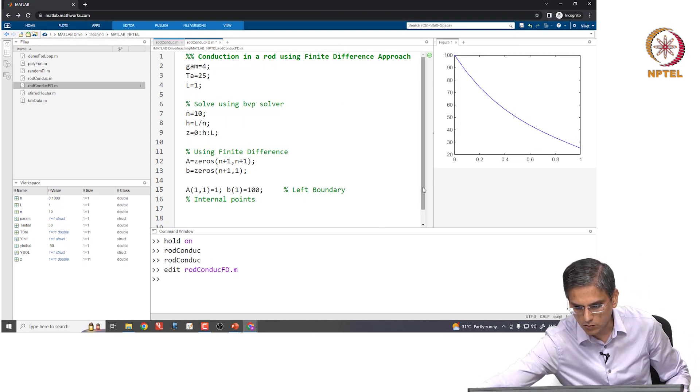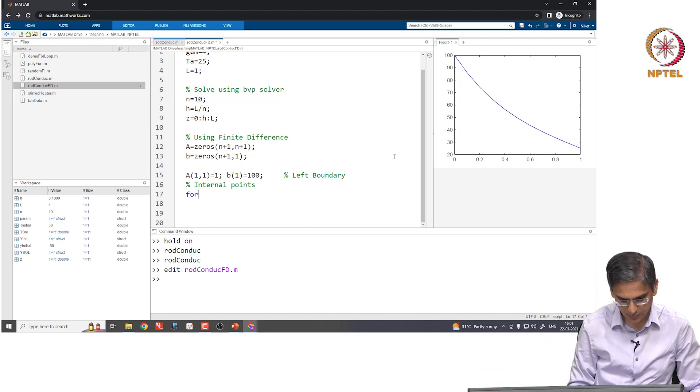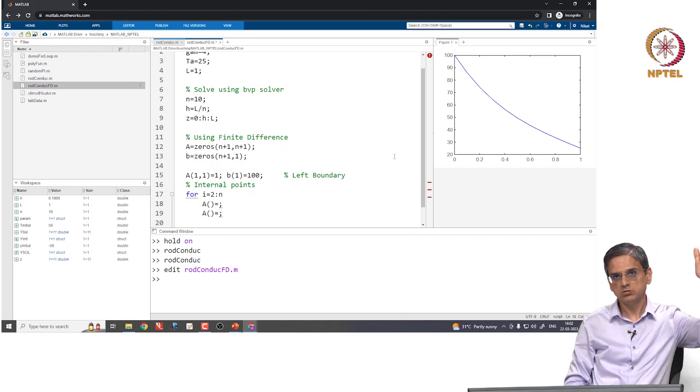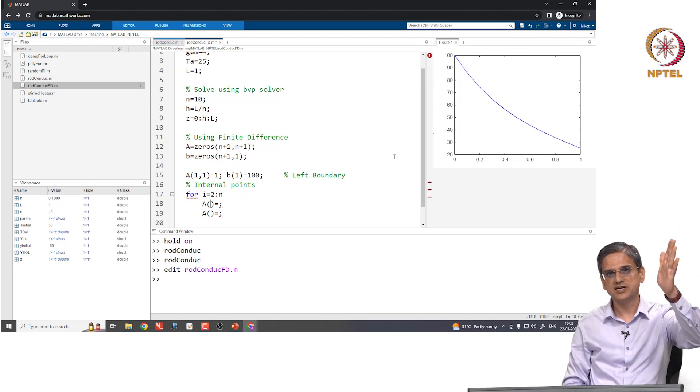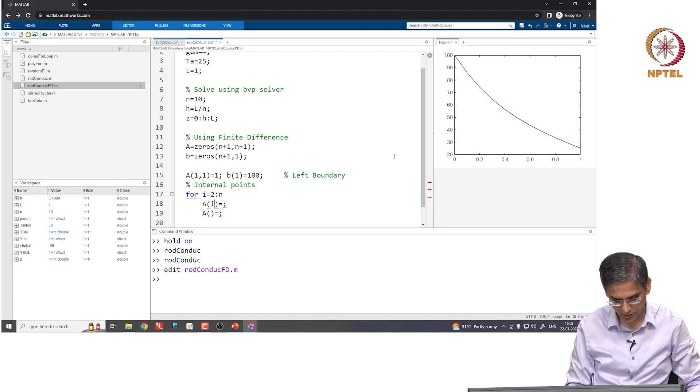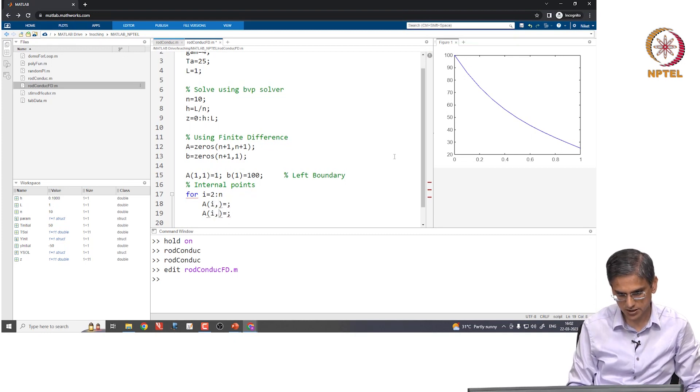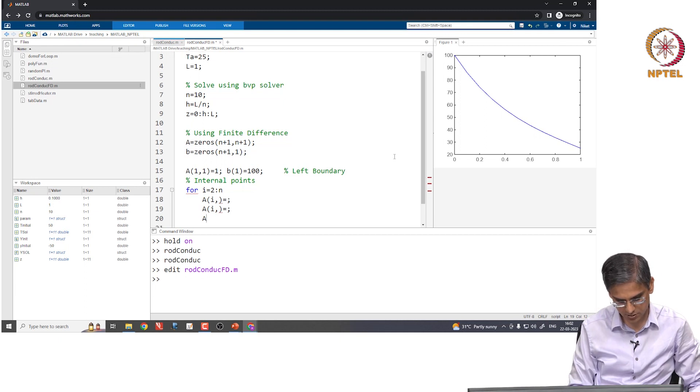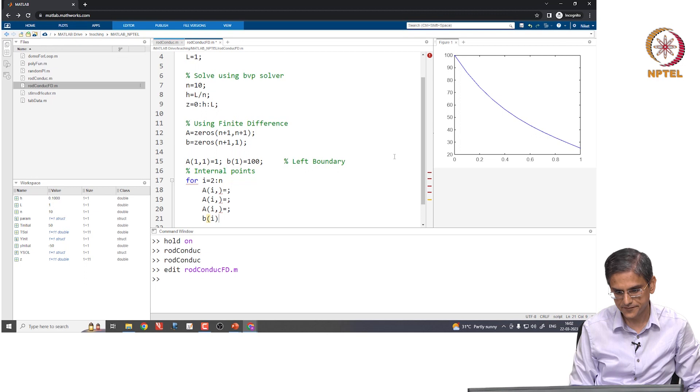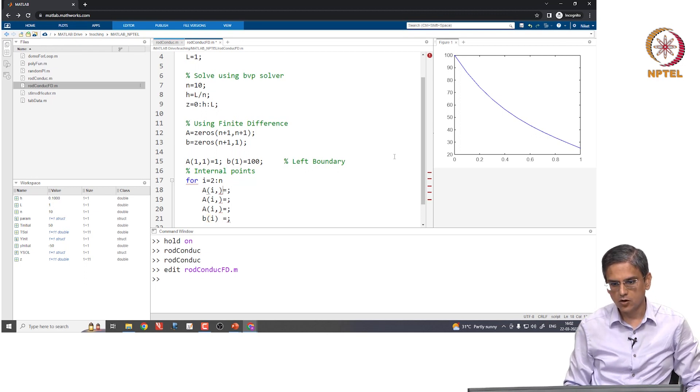Now, let us write down the equations for the internal points. So, what is the overall model equations for internal points? We will write the internal points for i equal to 2 to N and there we will need our 3 guys in the ith row. So, the ith row is going to be Ti minus 1 minus 2 plus gamma Ti plus Ti plus 1 equal to right hand side. That is going to be the ith row. So, Ai comma something is to be populated and we also need to populate Bi.